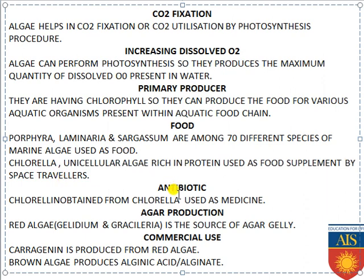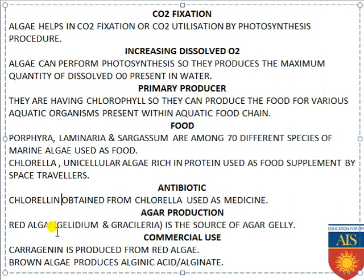Algae also produce an antibiotic called chlorellin, obtained from Chlorella, used as an antibiotic medicine. Agar is obtained from red algae — Gelidium and Gracilaria — and is commonly used as a bacterial culture medium. For commercial use, carrageenan is produced from red algae and brown algae produces alginic acid or alginate, commonly used for commercial purposes.